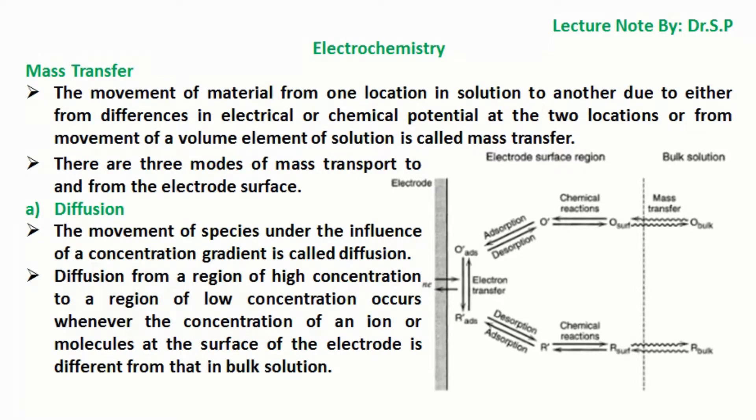Diffusion: The movement of species under the influence of a concentration gradient is called diffusion. Diffusion from a region of high concentration to a region of low concentration occurs whenever the concentration of an ion or molecules at the surface of the electrode is different from that in bulk solution.